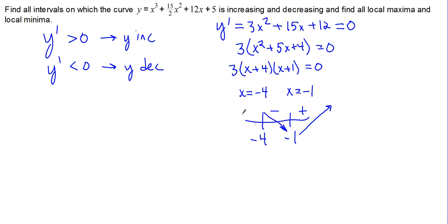If we plug in something less than negative 4, like negative 100, we end up with a positive, times a negative, times a negative, which, a positive times two negatives, gives us a positive. And we know that our function is increasing on that interval.